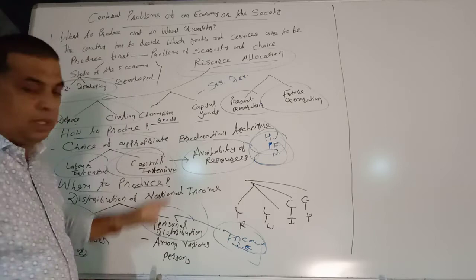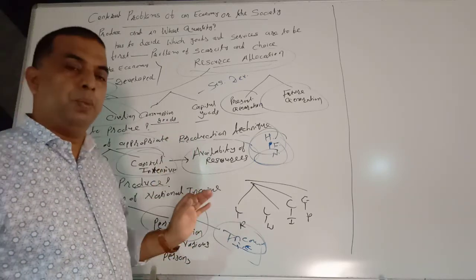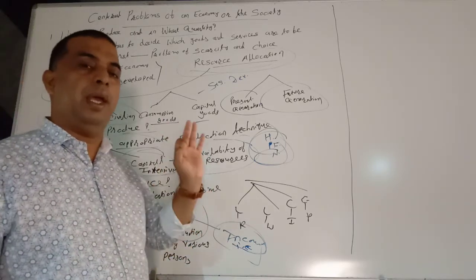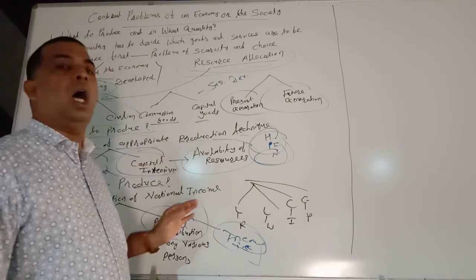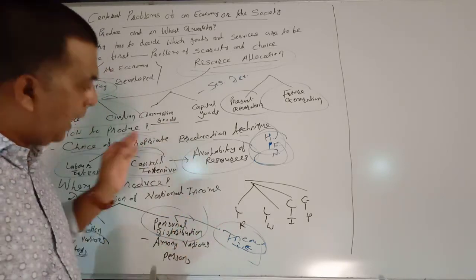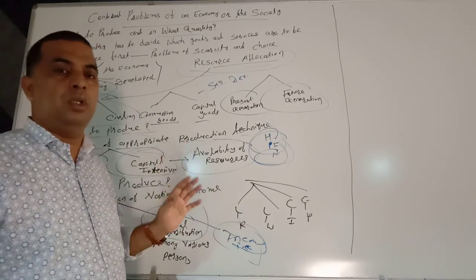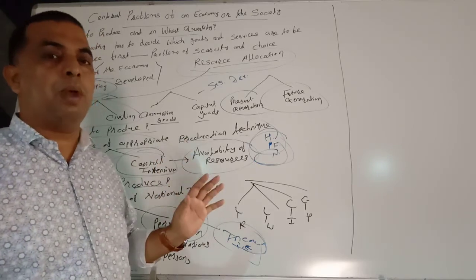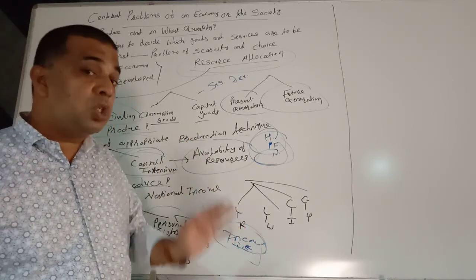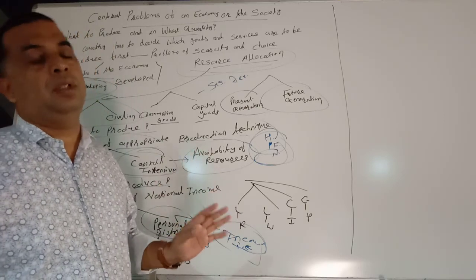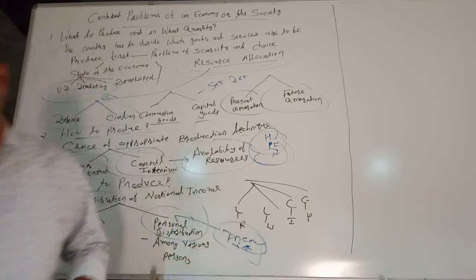So we have discussed three central problems of an economy. First: what to produce and in what quantity. Second: how to produce. And last: for whom to produce — which is associated with the distribution of national income. Thank you very much.